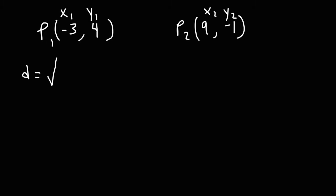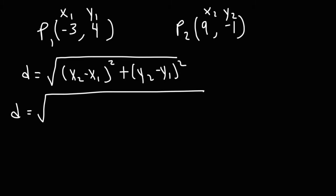Next, let's write the distance formula. So it's equal to the square root of x2 minus x1 squared plus y2 minus y1 squared. And now, let's plug in the data. So x2 is 9, and then minus x1. x1 is negative 3. And then y2 is negative 1, minus y1, which is 4.